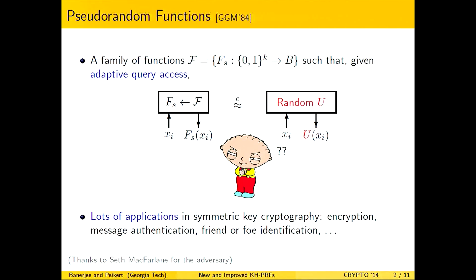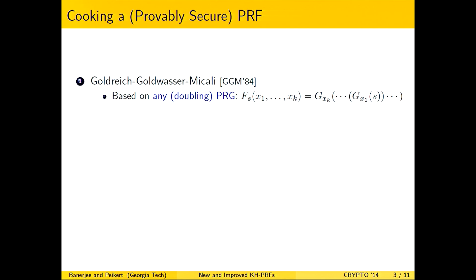Pseudorandom functions have been ubiquitous in symmetric key cryptography, discussed a lot yesterday. Basically they are a family of functions parametrized by a secret key or seed. Once you choose a seed at random and initialize the function, it is completely deterministic and also indistinguishable from a random function. There are three basic ways of constructing a provably secure pseudorandom function. The first is the Goldreich-Goldwasser-Micali construction, which makes use of a pseudorandom generator and invokes it once for each bit of the PRF input. As you can see, it is highly sequential in the length of the input.